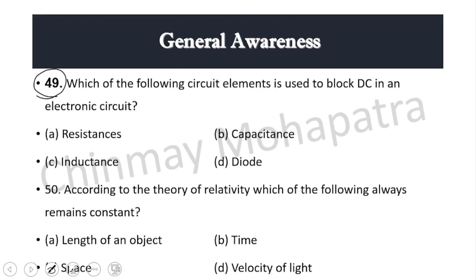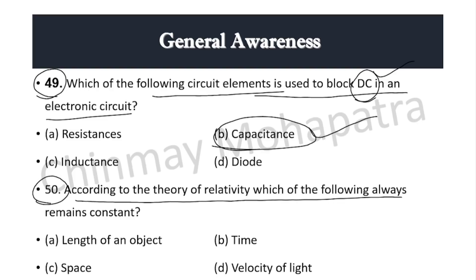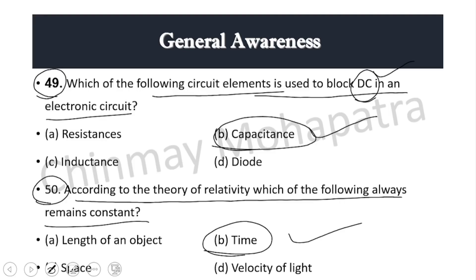Question 49: Which circuit element is used to block DC in an electronic circuit? Capacitors are used to block direct current. Question 50: According to the theory of relativity, which of the following always remains constant? Right answer: time always remains constant.